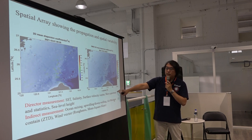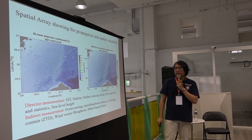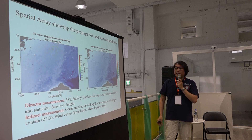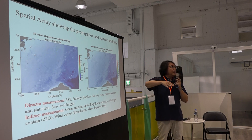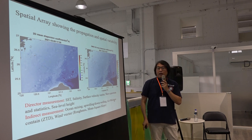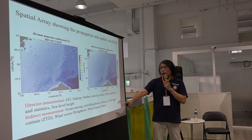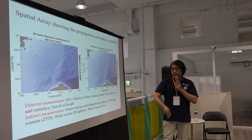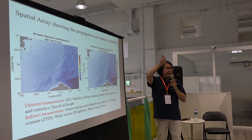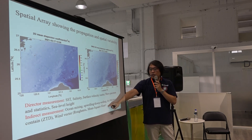We have direct measurements like sea surface temperature, salinity, current vector, wave spectrum and statistics, and sea surface height including tsunami and tide. We also use this information to infer ocean mixing, pollutants, oil spills, upwelling and downwelling in vertical structures, air moisture content using ZTD data from GPS signals, and wind vectors. They provide very valuable information.